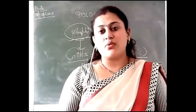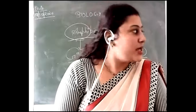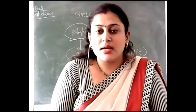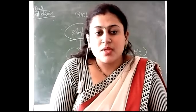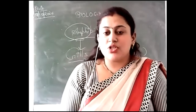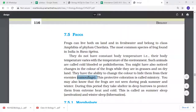Nature has given many animals this ability. Like Girgit - what do you call Girgit? Hemidactylus. They have a great color-changing tendency. They also change color according to their environment. This protective coloration is called mimicry. The process of color change for protection is known as mimicry, which you will study in full detail in BSc.